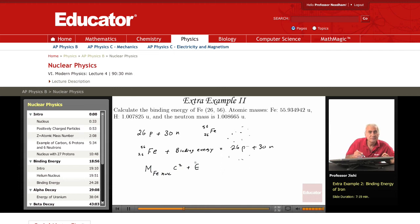So for the Fe nucleus, I have the mass of Fe nucleus C squared plus binding energy E is equal to 26 mass of the proton C squared plus 30 mass of the neutron C squared.